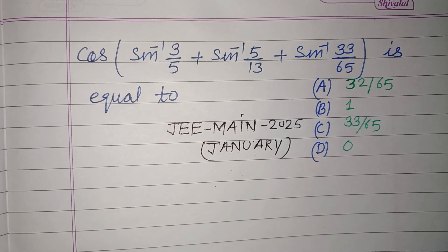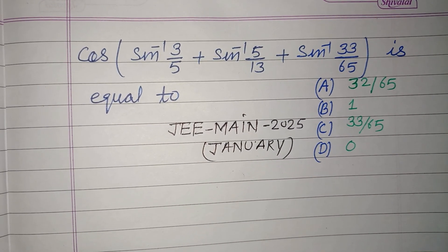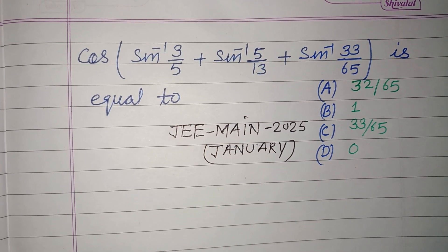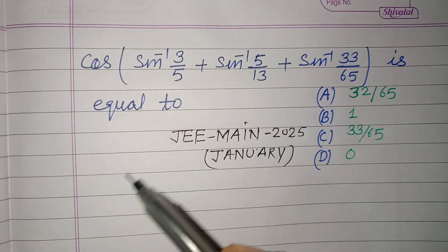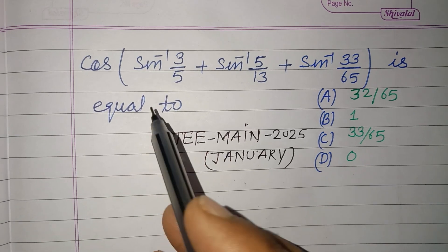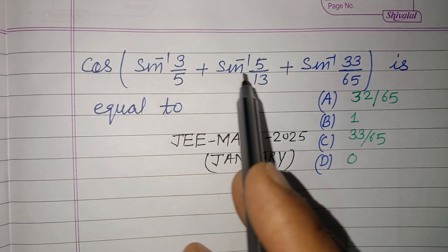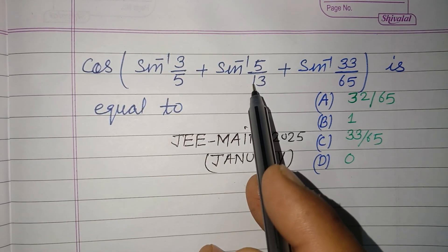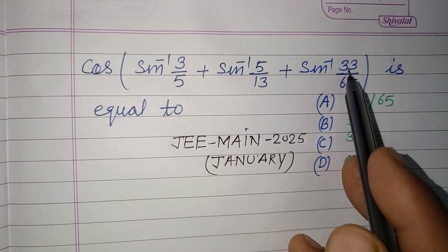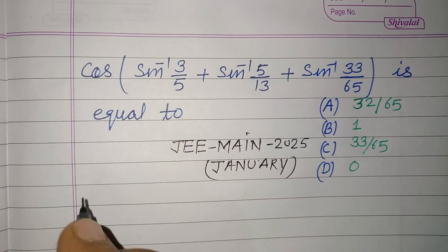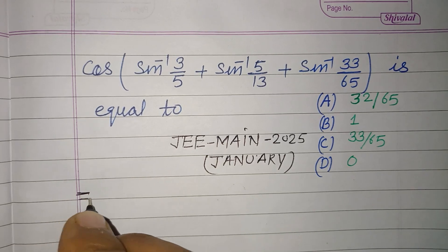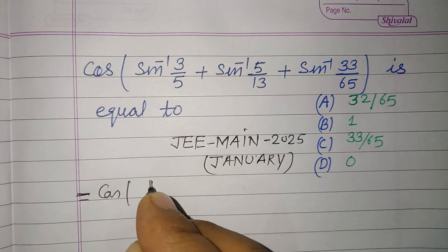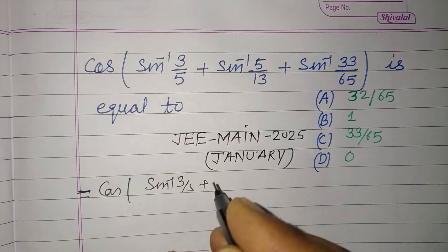Hello viewers, warm welcome to this YouTube channel. This is a question from JEE Main 2025 based on inverse trigonometric functions. cos(sin⁻¹(3/5) + sin⁻¹(5/13) + sin⁻¹(33/65)) is equal to. So students, we write cos(sin⁻¹(3/5) + sin⁻¹(5/13) + sin⁻¹(33/65)).